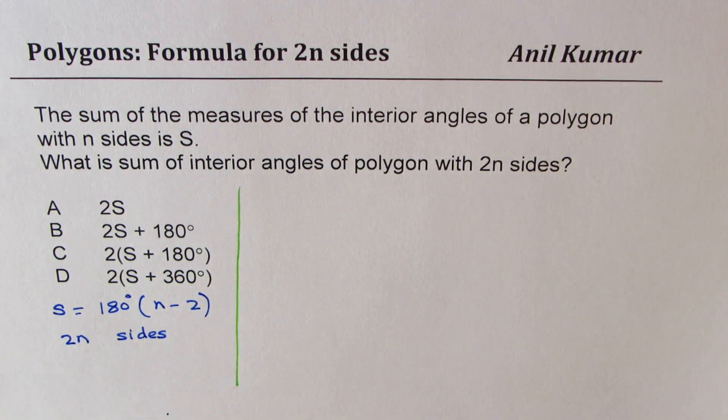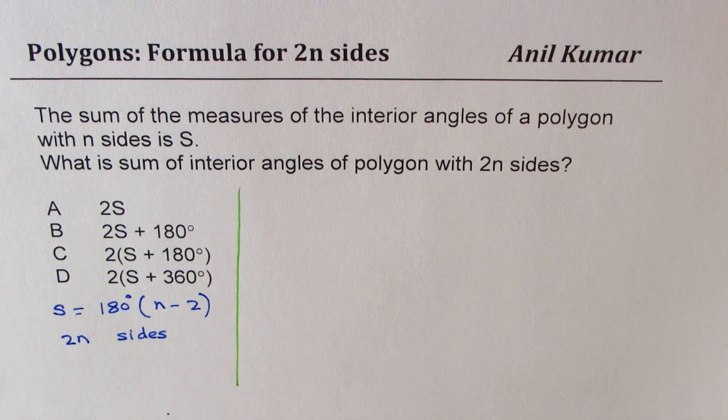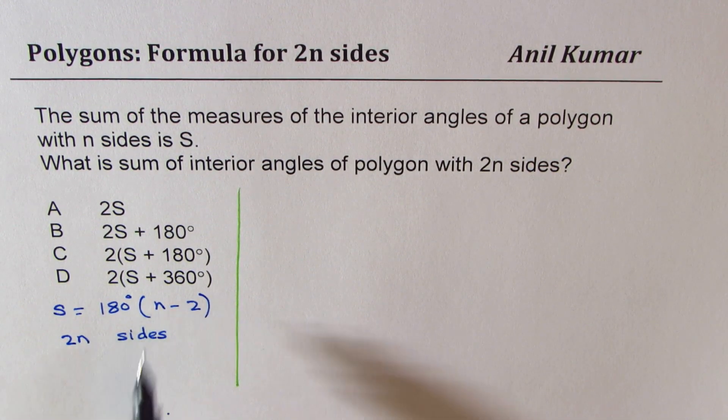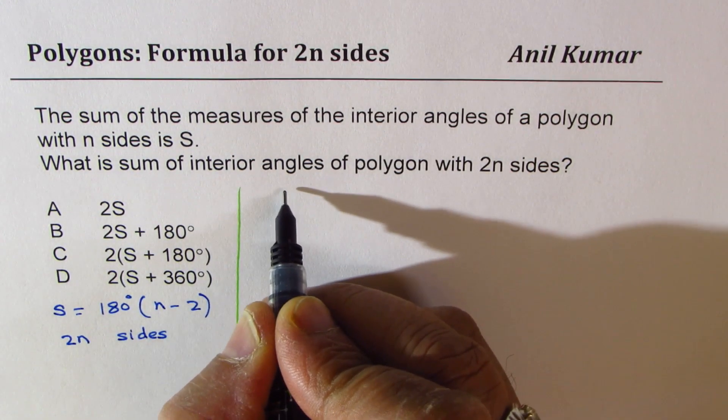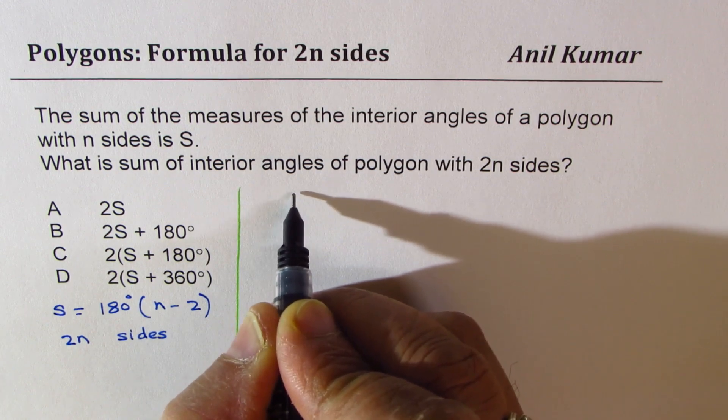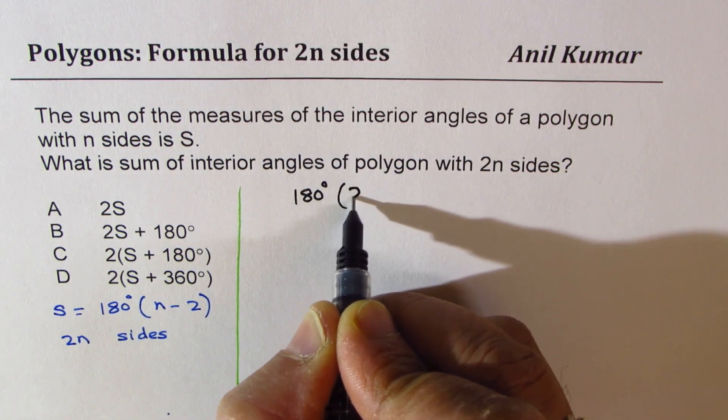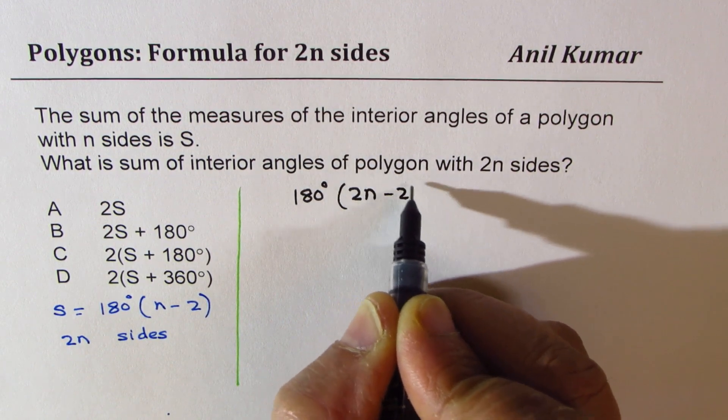So to derive the formula, we will replace n with 2n, and so we'll get angle as 180 degrees times 2n minus 2, right?